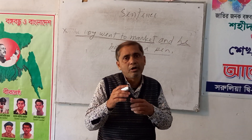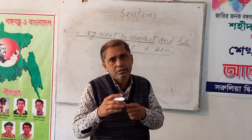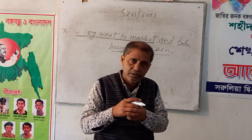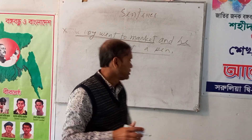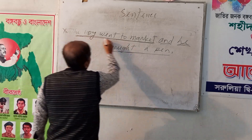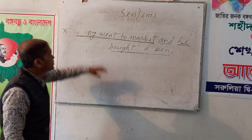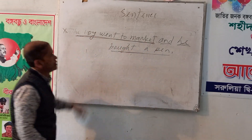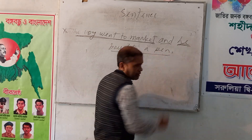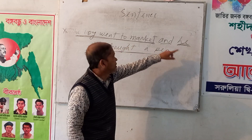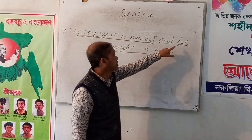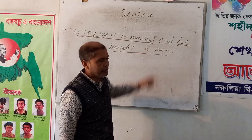A clause which can complete the meaning of the sentence without the help of other clauses is called a principal clause. For example, 'The boy went to market' — this is a principal clause. 'He bought a friend' — this is not a principal clause, because there is a conjunction before it, so it cannot stand alone as a sender.